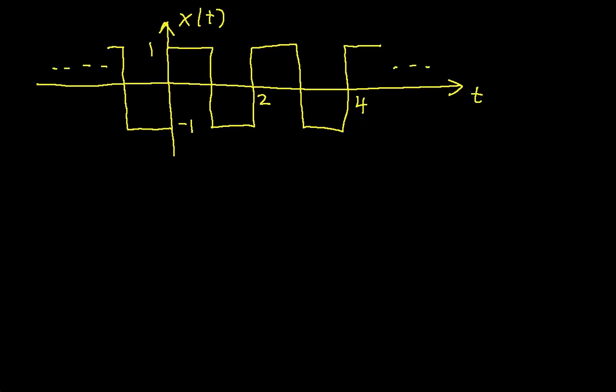In order to compute Fourier series coefficients, the first thing that you need to do is identify the fundamental period of the signal, because T0 shows up in a lot of places in these computations. You can see I have this square wave. It starts at 0 and then goes until it gets to time 2 and repeats itself.